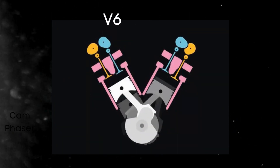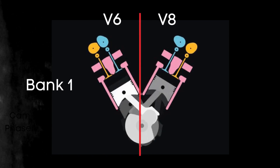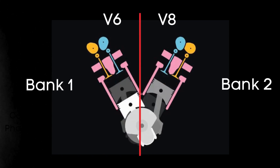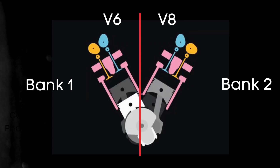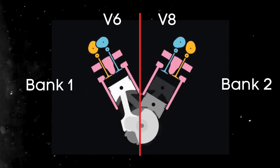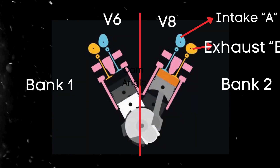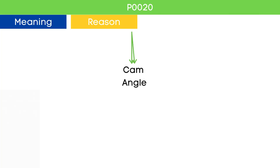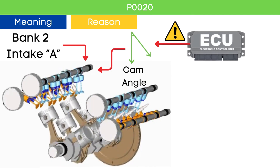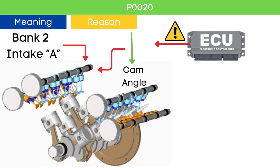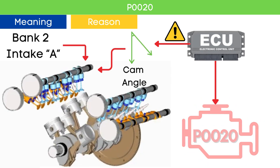In the case of V6 or V8 engines, there are two camshafts: bank 1 and bank 2. For dual overhead camshaft, or DOHC, engines, there are two camshafts per bank — intake and exhaust. When the ECU detects that the bank 2 intake camshaft position is not reaching the targeted cam angle, it triggers OBD2 code P0020.